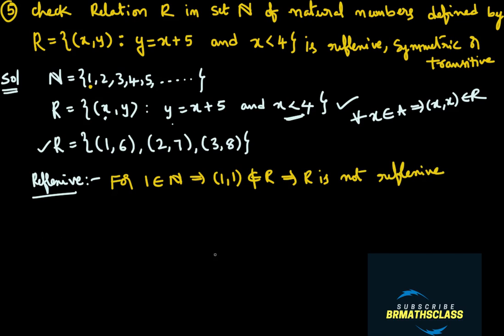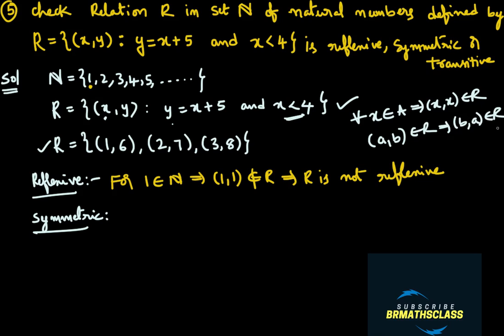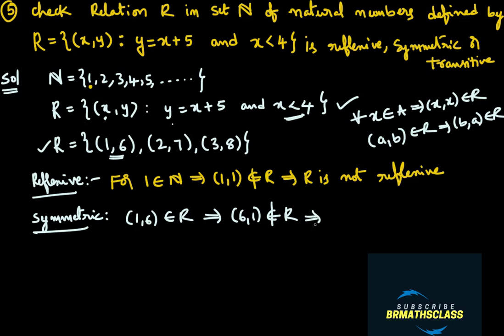Now we will check the symmetric property. To check symmetry, we take an ordered pair (a, b) in relation R, and if ordered pair (b, a) is also in the relation, then it is symmetric. The ordered pair (1, 6) is in the relation R. Is ordered pair (6, 1) also in the relation? No, (6, 1) does not belong to R. So it fails to satisfy the symmetric property, and we say that R is not symmetric.